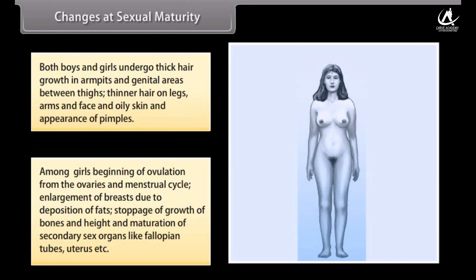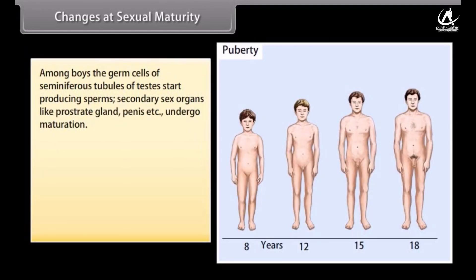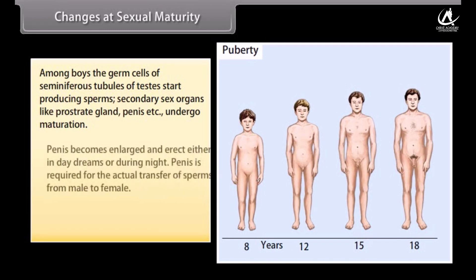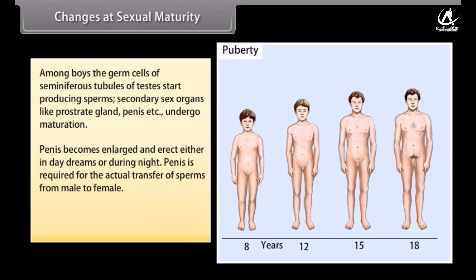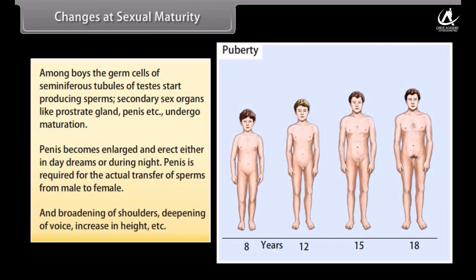Among boys: germ cells of seminiferous tubules of testes start producing sperms; secondary sex organs like prostate gland and penis undergo maturation; penis becomes enlarged and erect; the penis is required for the transfer of sperms from male to female; and there is broadening of shoulders, deepening of voice, and increase in height.